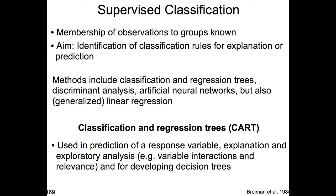What are classification and regression trees, also called CART? They were introduced by Breiman and colleagues in 1984 — a very classical book in this context. They are used for prediction of a response variable, to explain and explore patterns such as variable interactions and the relevance of environmental variables, and for developing decision trees. Let's quickly look at what a decision tree looks like.